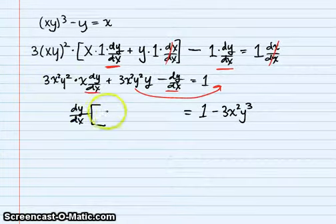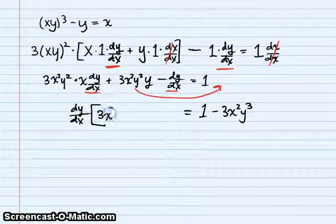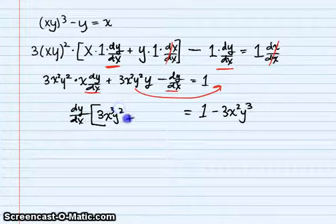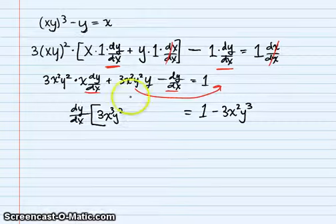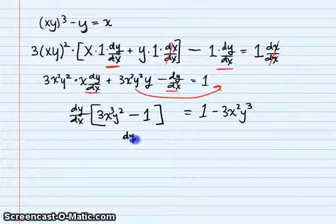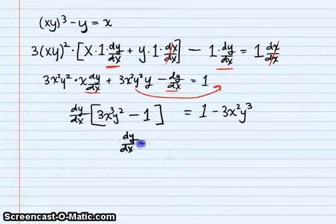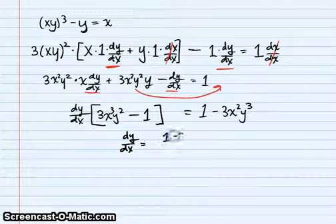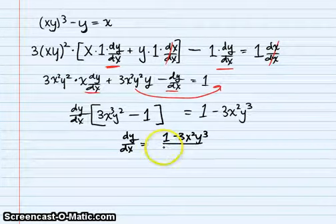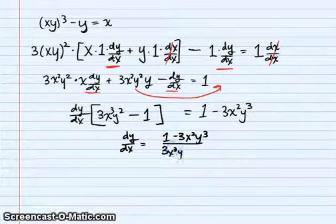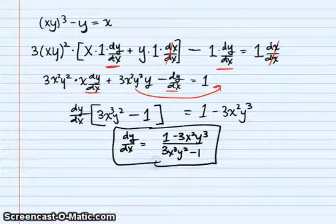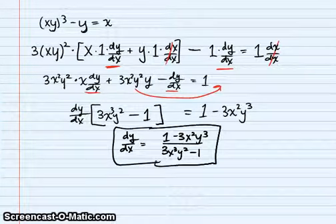We get dy/dx times (3x³y² minus one) equals one minus 3x²y³. So dy/dx equals (1 minus 3x²y³) all over (3x³y² minus one). The nice thing about implicit differentiation is we can leave it like that.